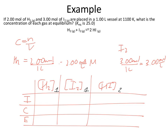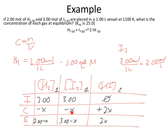Our initial concentrations: H₂ is 2.00 mol/L, I₂ is 3.00 mol/L, and HI is 0 since we have no products at the start. For the change row: H₂ and I₂ are reactants being consumed, so both get negative x (coefficient of 1 each). HI is a product being formed, with a coefficient of 2, so it gets plus 2x. Equilibrium values are then 2.00 − x, 3.00 − x, and 2x respectively.